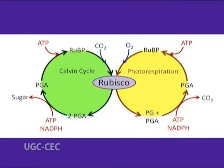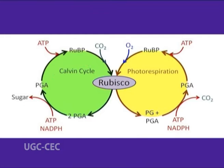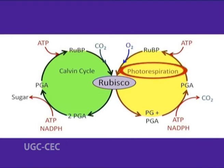When rubisco combines with carbon dioxide, it results in the Calvin cycle and subsequently the production of organic molecules. But when it combines with oxygen, it results in a wasteful process called photorespiration.